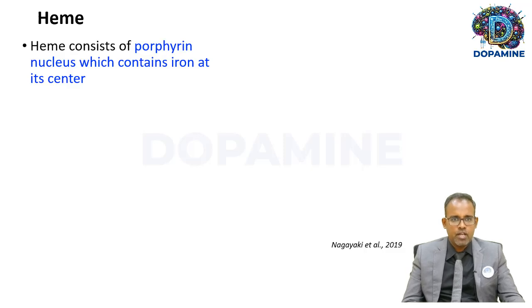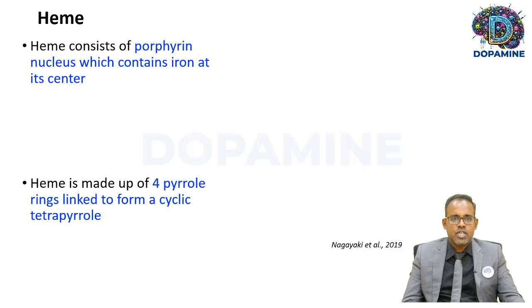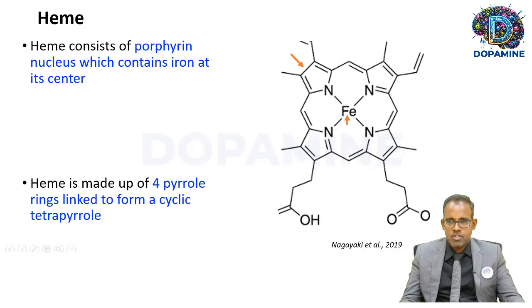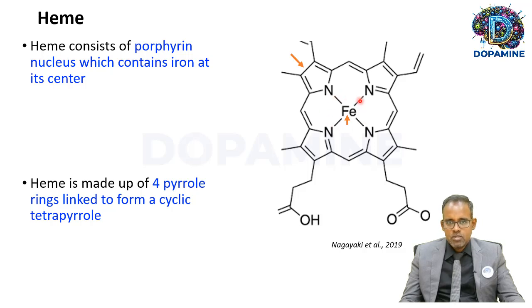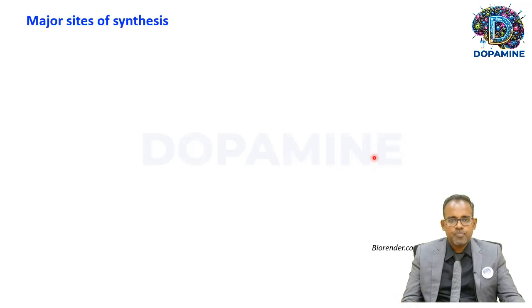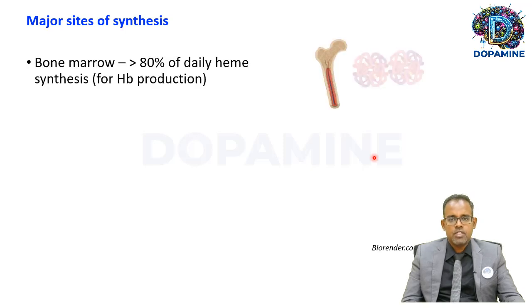Heme consists of a porphyrin nucleus with iron coordinated at its center. This structure is a porphyrin ring, and heme is made up of tetrapyrrole rings linked to form a cyclic tetrapyrrole.